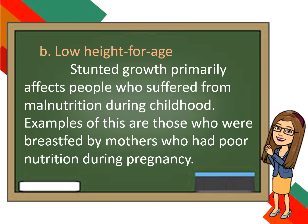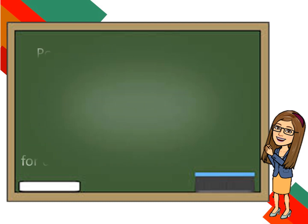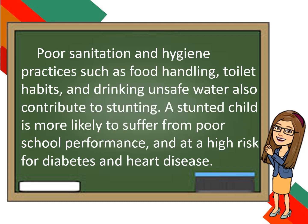Stunted growth primarily affects people who suffered from malnutrition during childhood — for example, those who were breastfed by mothers who had poor nutrition during pregnancy. Poor sanitation and hygiene practices such as food handling, toilet habits, and drinking unsafe water also contribute to stunting. A stunted child is more likely to suffer from poor school performance and is at a high risk for diabetes and heart disease.